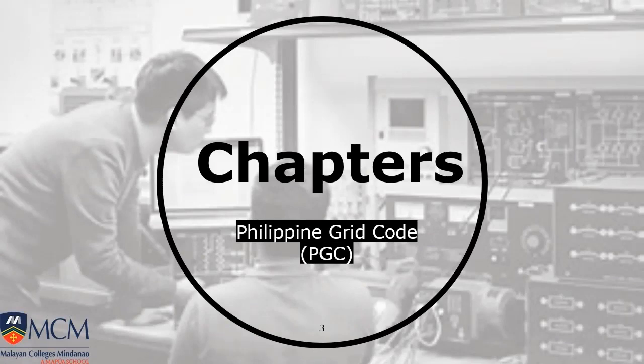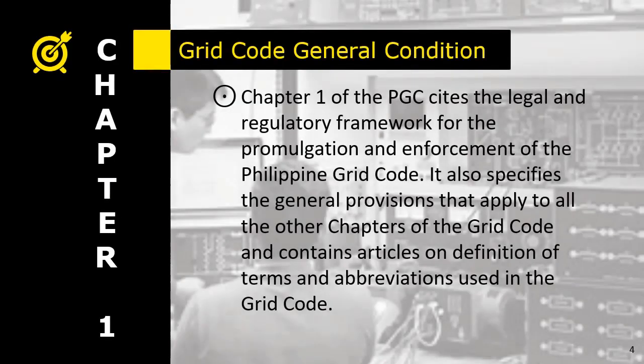We will just cover the first five chapters of this grid code. Chapter 1 cites the legal and regulatory framework for the promulgation and enforcement of the Philippine Grid Code. It also specifies the general provisions that apply to all other chapters, and importantly, it contains the definition of terms and abbreviations used in this code.